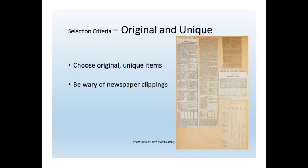Now we'll move into more tangible criteria related to selecting materials for your project. One of the first things to think about as you look at the wide array of materials is how original or unique each item is — or perhaps better put, how close to the original it is. As items are reproduced, especially images, quality is lost. For example, you would prefer an original photograph rather than a copy printed in a newspaper. You would prefer to digitize an original letter rather than a photocopy. Your selection preference should lean towards the original end of the spectrum.